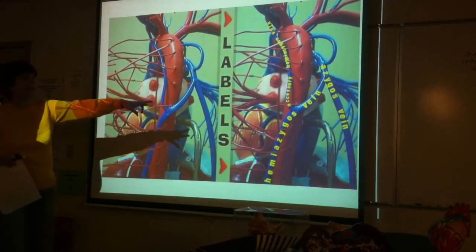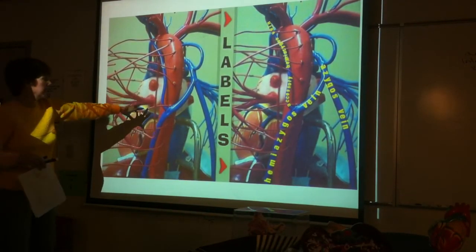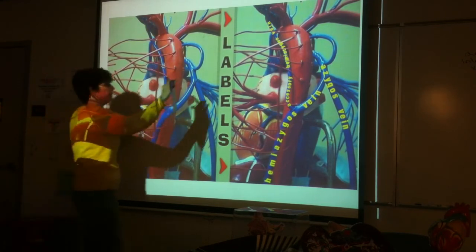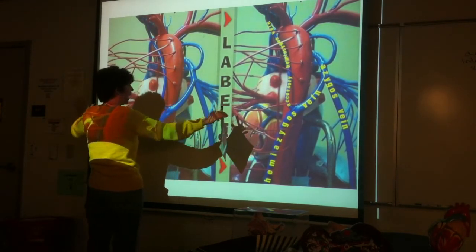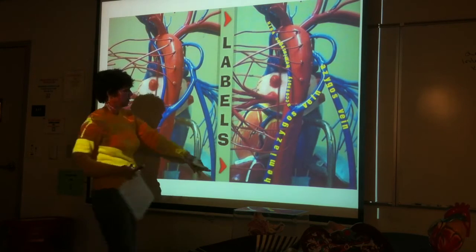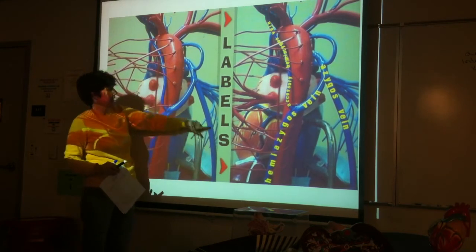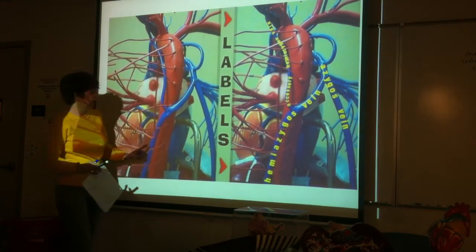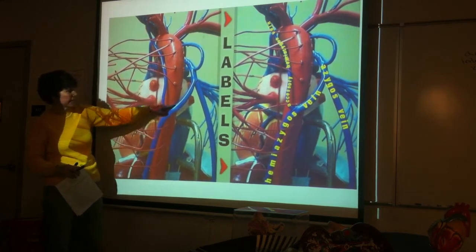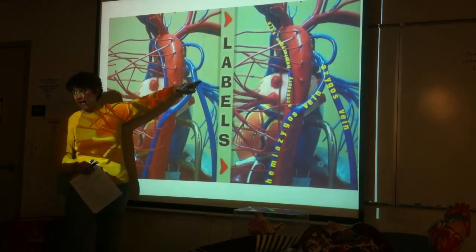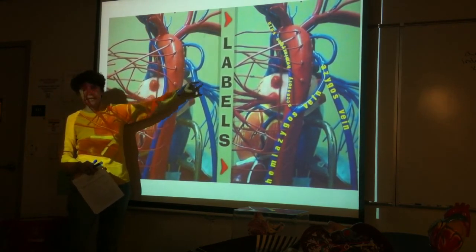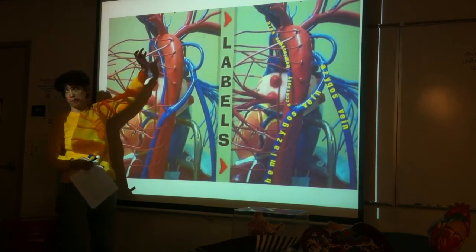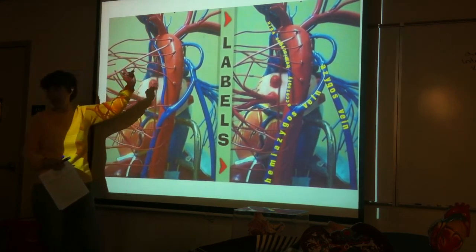Looking at the wire models from the back — this would be the right side, this would be the left side. Here is the azygos coming up and going into the superior vena cava. Here is the hemiazygos coming over, crossing and joining into the azygos. And the accessory hemiazygos going up to the brachiocephalic vein.